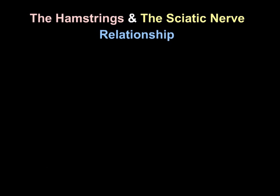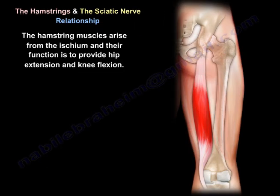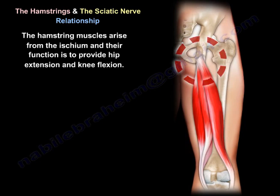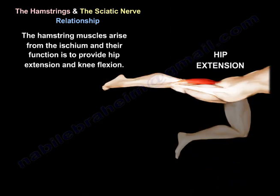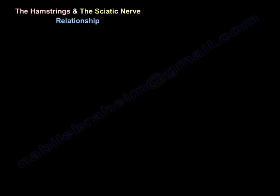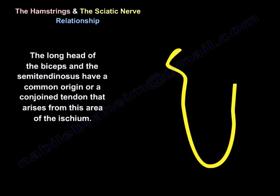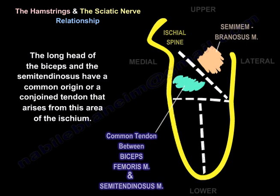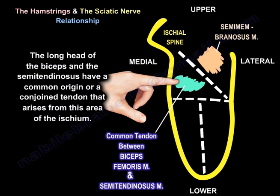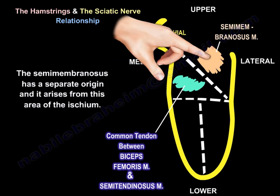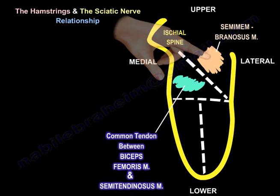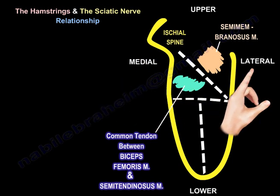The hamstring and the sciatic nerve relationship. The hamstring muscles arise from the ischium, and their function is to provide hip extension and knee flexion. There are three hamstring muscles: the biceps femoris, the semitendinosus, and the semimembranosus. The long head of the biceps and the semitendinosus have a common origin, or a conjoined tendon, that arises from the lateral part of the ischium, while the semimembranosus has a separate origin from the medial part of the ischium.